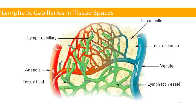Lymphatic capillaries are quite different than cardiovascular system capillaries. In the cardiovascular system there's an unending sequence of blood vessels: arteries carry blood away from the heart, leading to arterioles, to capillary beds, to venules, to veins, back to the heart, and so on. Lymphatic capillaries and lymphatic vessels are really different in that they have an actual beginning and an end, starting with lymphatic capillaries.